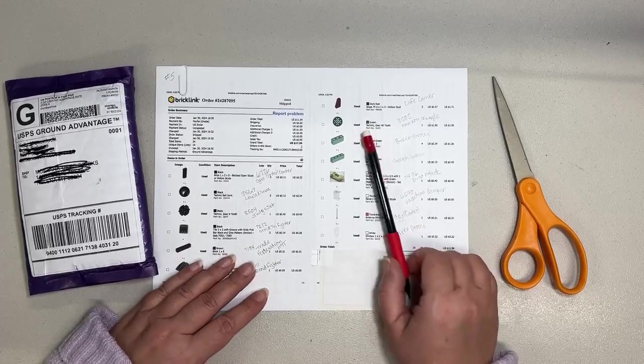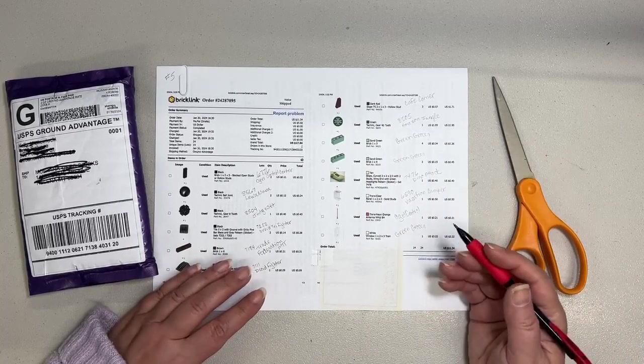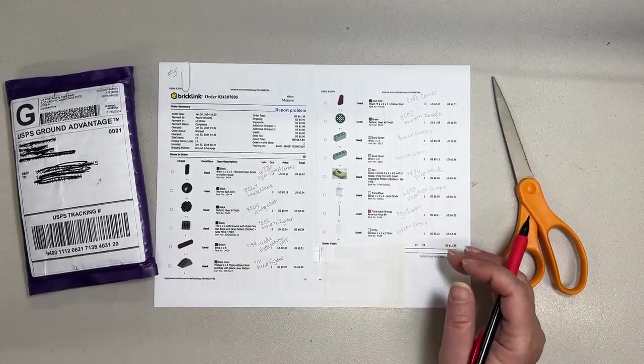Good afternoon from Big Sky Country. I'm Stacey, owner of Montana Used Bricks, and I have another BrickLink order that I'm going to show you today.